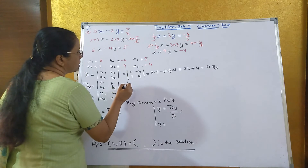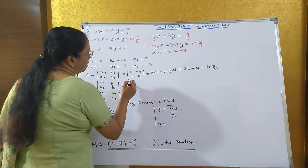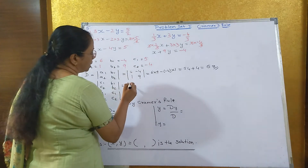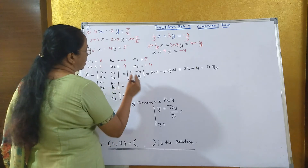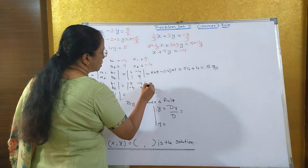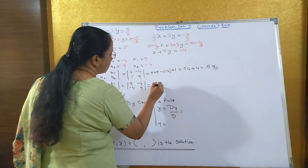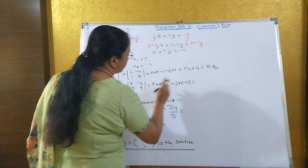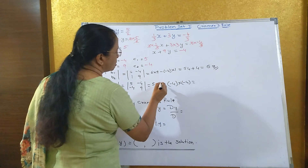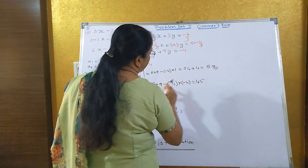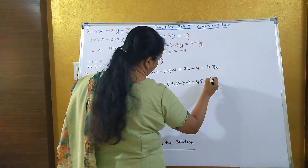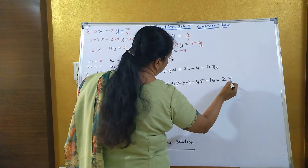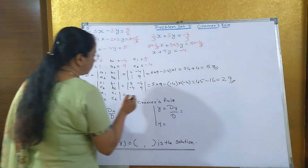Now find Dx. Dx uses C1, C2 in place of the x-column: C1 = 5, C2 = minus 4, B1 = minus 4, B2 = 9. Cross multiply: 5 into 9 minus (minus 4) into (minus 4), that is 45 minus 16, which equals 29. So the value of Dx is 29.